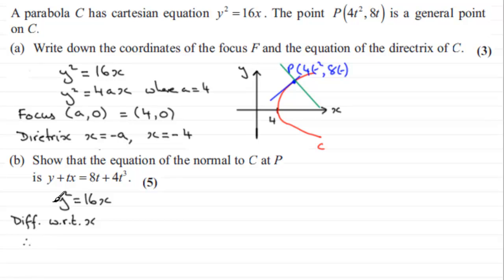If I differentiate this implicitly, differentiating y squared with respect to x is 2y. And then, remember, put dy by dx afterwards. And then, if I differentiate 16x with respect to x, that's going to be 16. So, if I now divide through by 2 and y, then I get that dy by dx is going to equal 16 divided by 2, which is 8, and it will be over y.